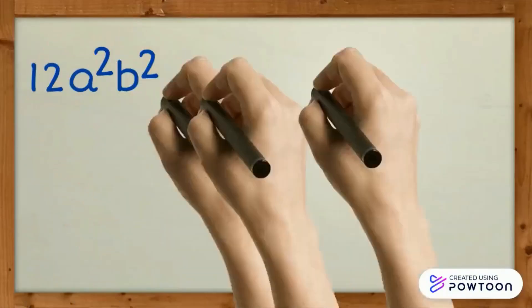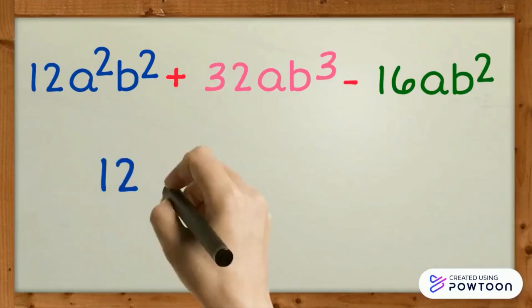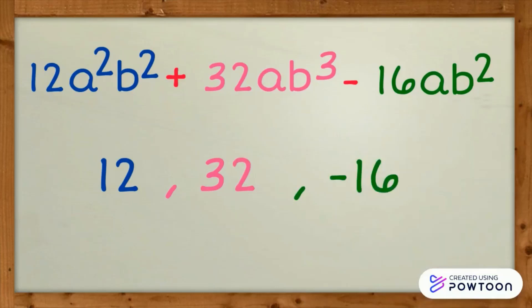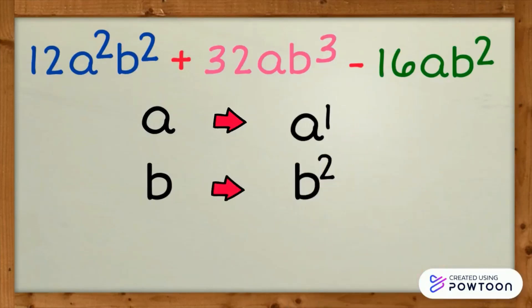Let us check this one. The numerals are positive 12, positive 32, negative 16. What is the GCF? You got it right. 4 is the GCF. Observe that all three terms have an A and a B. For A, the least exponent is 1. For B, the least exponent is 2. Therefore, the common minimum factor is 4ab squared.